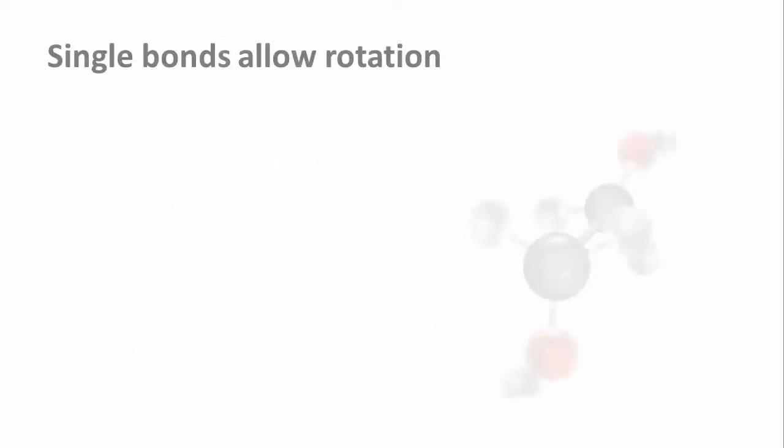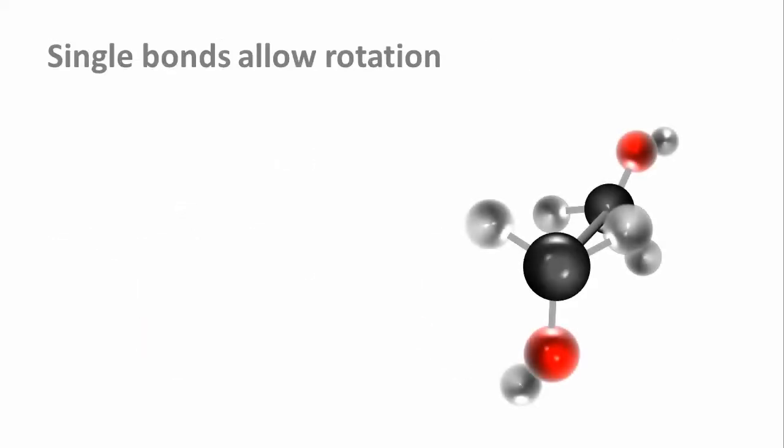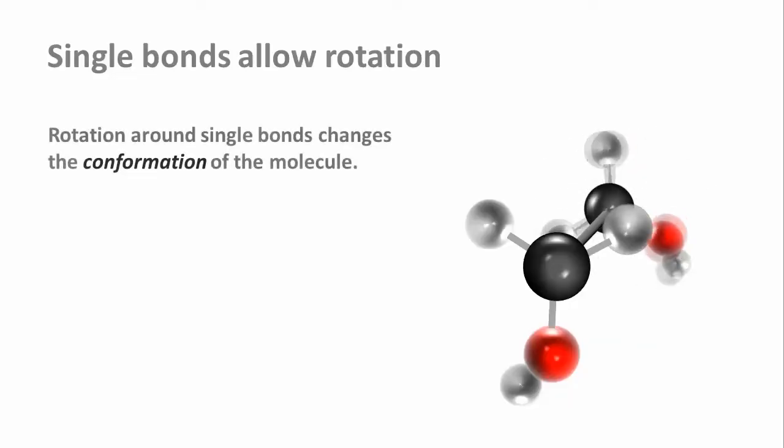Single bonds between atoms allow rotation, and rotation around single bonds changes the conformation of the molecule. In biochemistry, we often talk about conformational changes, and what we mean is that the overall shape of a molecule changes by rotating parts of the molecule around one or several single bonds.